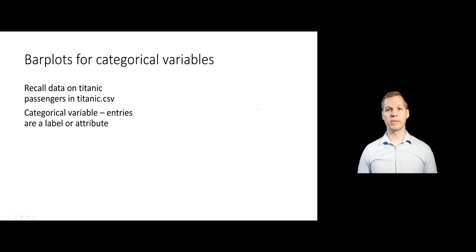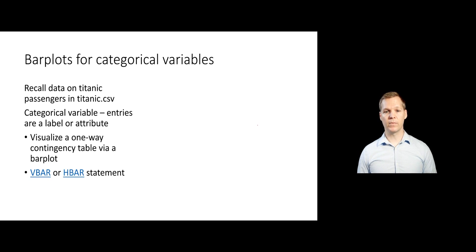Let's go ahead and start creating some bar plots. Bar plots are just going to be representations of the contingency tables that we made previously. We'll use the same data set that we did before and basically turn all of those contingency tables into bar plots. We'll be using Titanic.csv.